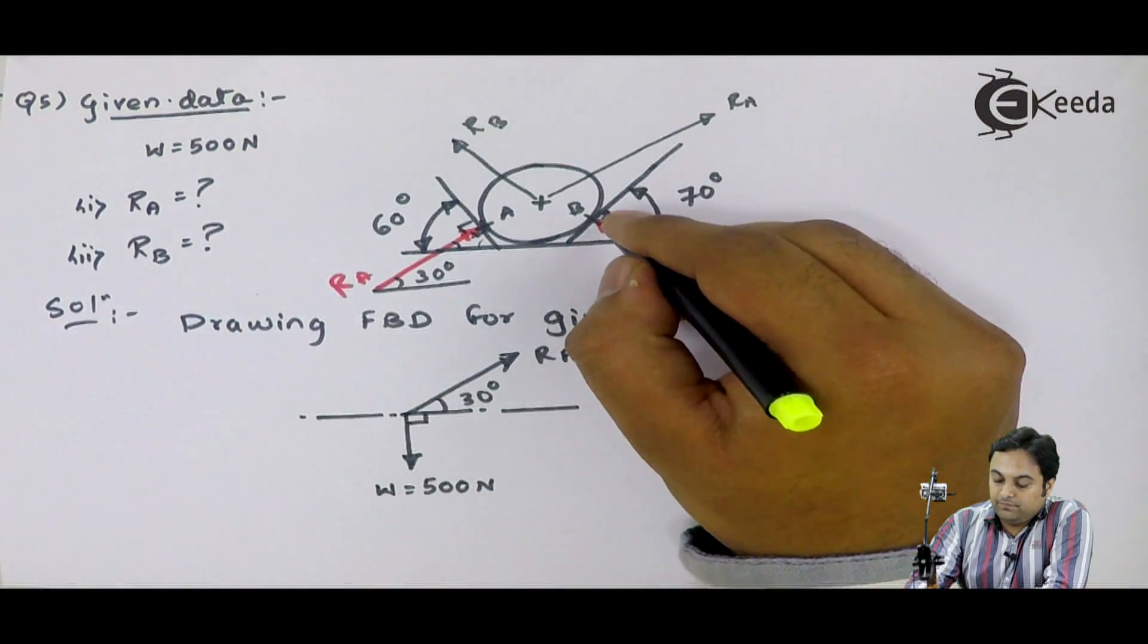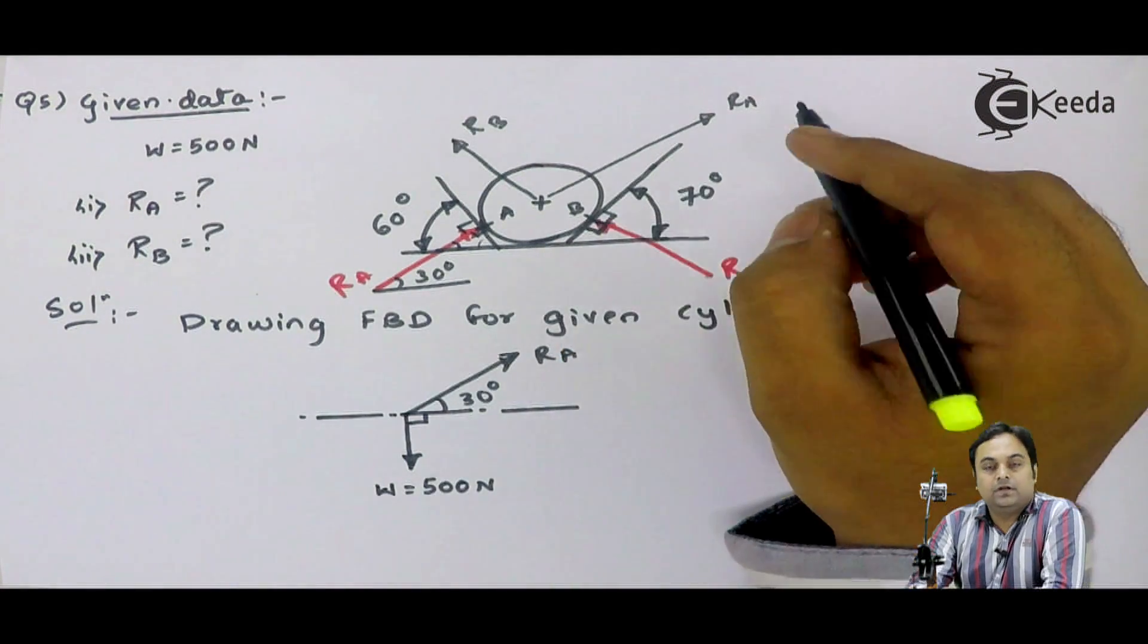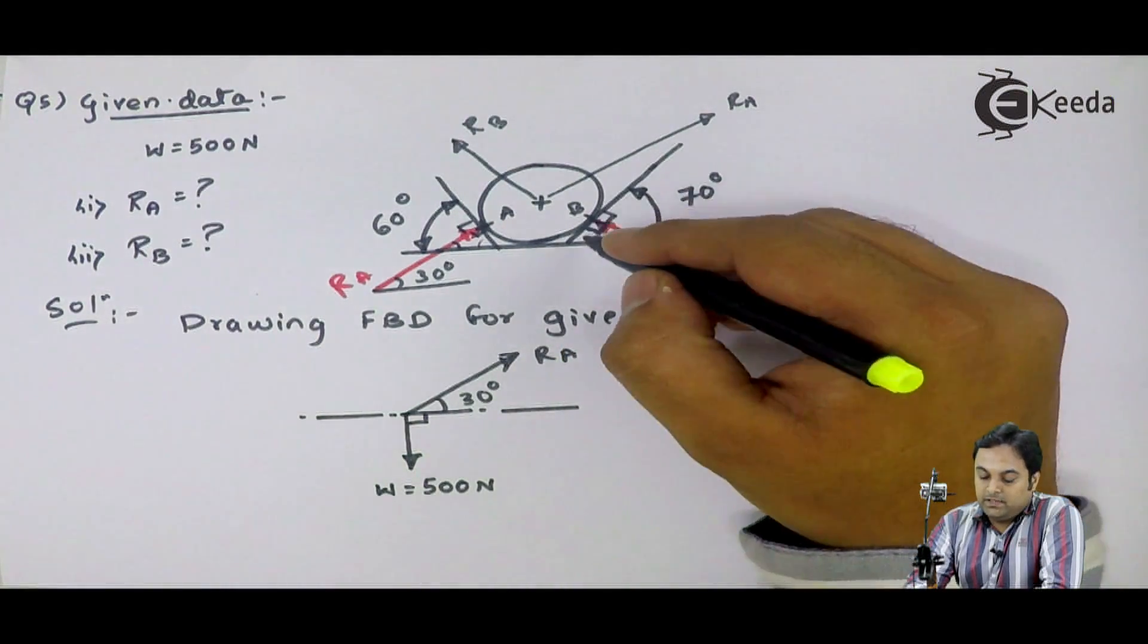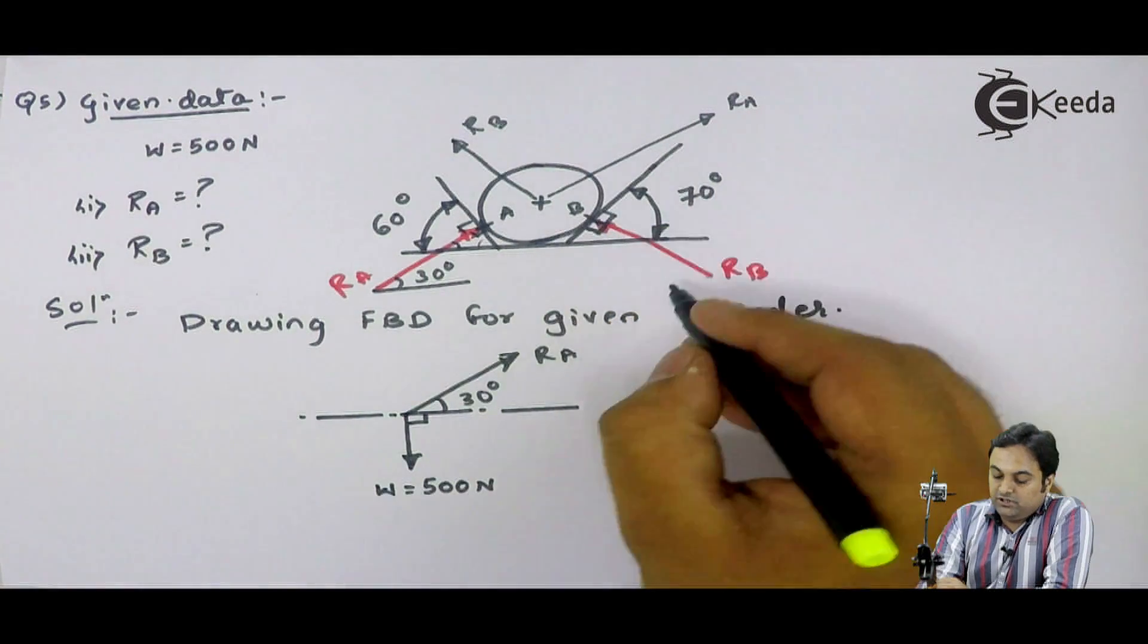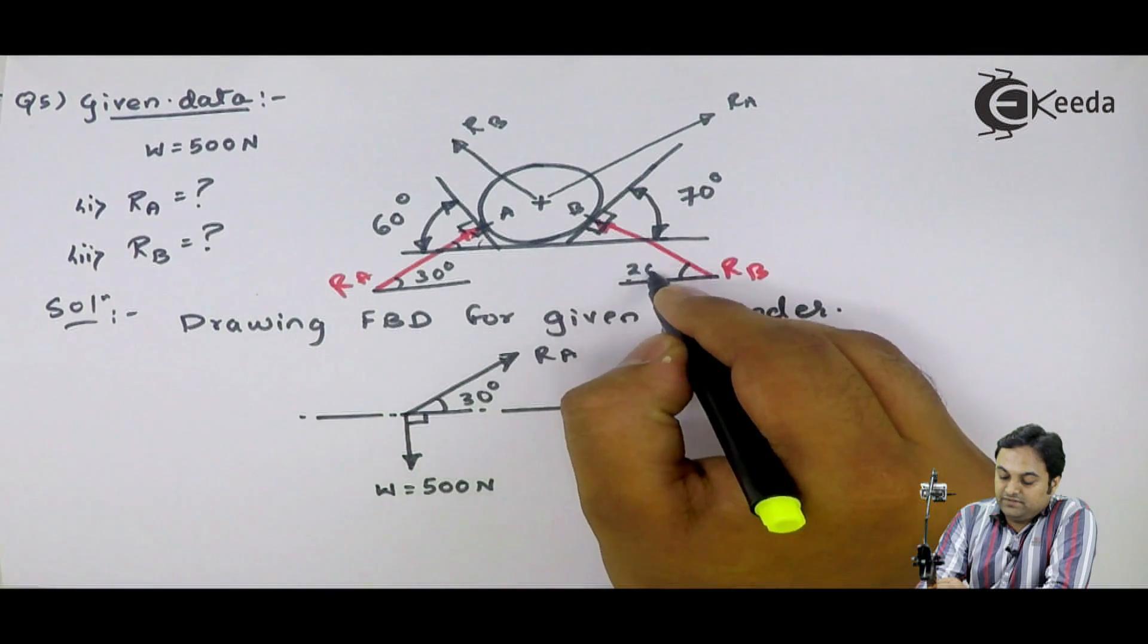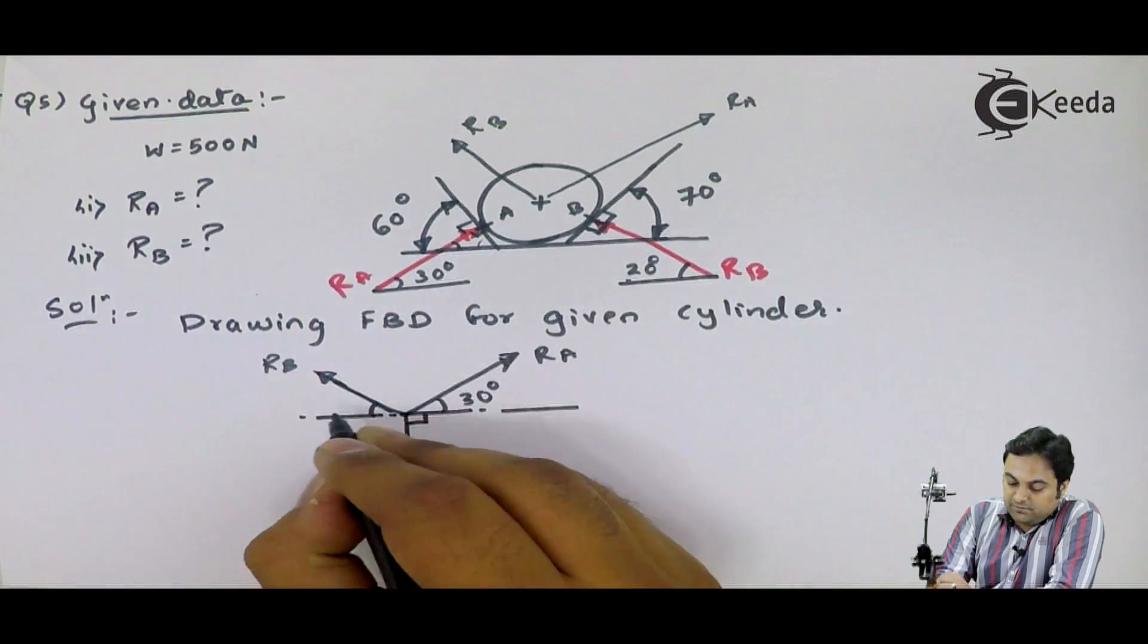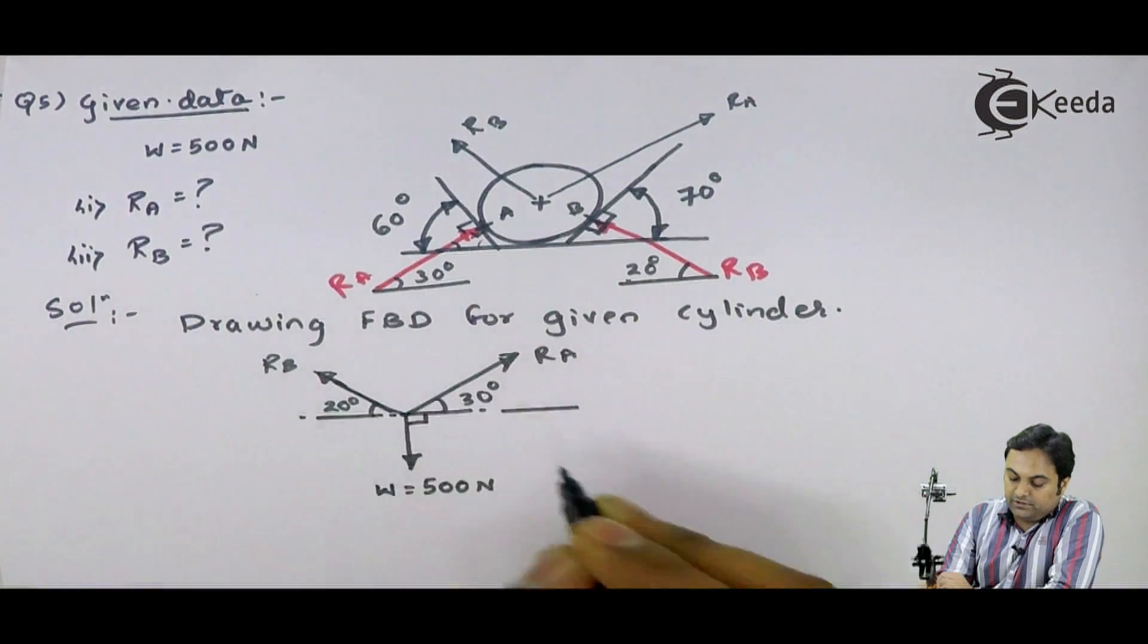Now, with the surface, it is perpendicular, the reaction. Here I have angle as 70. So, the remaining angle with horizontal will be 90 minus 70. That gives me 20 degree. The reaction at B at 20 degree.